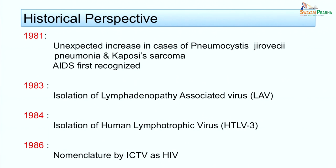AIDS was first recognized in 1981. A sudden increase was observed in very uncommon diseases like Pneumocystis carinii pneumonia and the malignancy Kaposi's sarcoma in young homosexuals and IV drug users. It was observed that these cases had developed profound immunosuppression and had become susceptible to opportunistic infections. In 1983, Luc Montagnier and his colleagues from the Pasteur Institute of Paris isolated a virus from a patient with persistent generalized lymphadenopathy, naming it lymphadenopathy-associated virus or LAV.